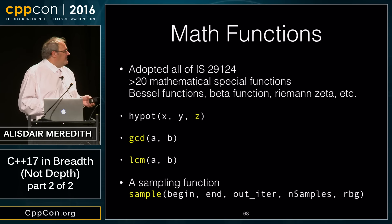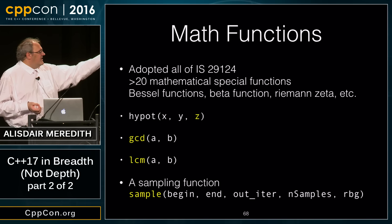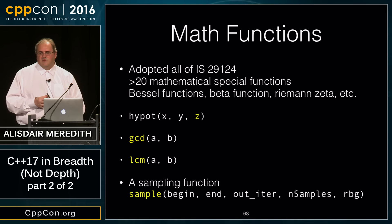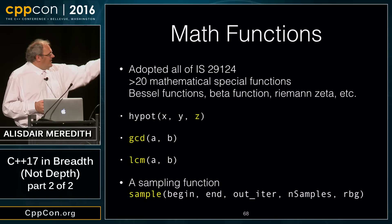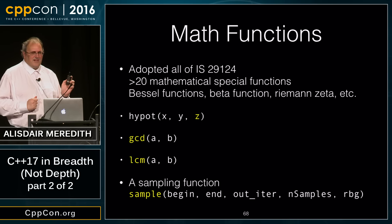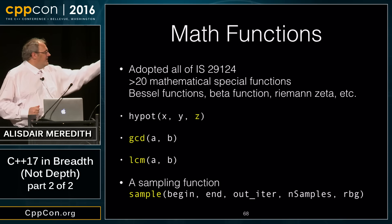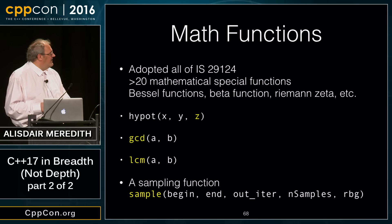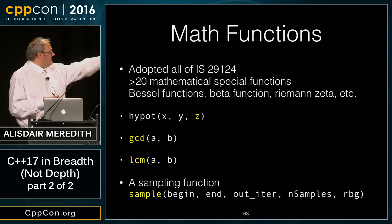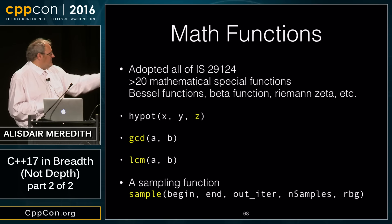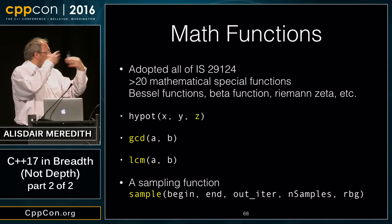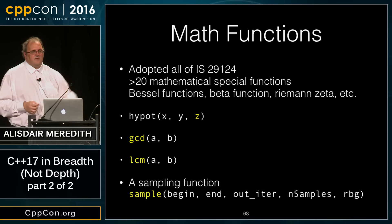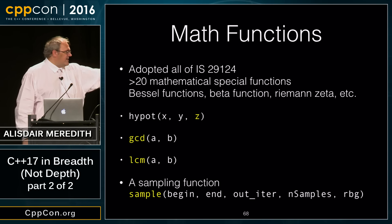We're also adding a three-argument version of the hypotenuse function — so we can do 3D as well as 2D triangles — plus greatest common divisor, least common multiple, and a sample function that writes a number of samples over a range to an output iterator using a specified random generator.